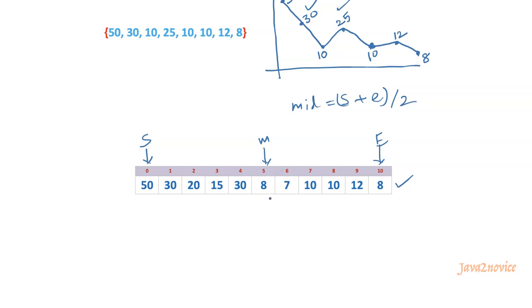Is the mid element 8 a peak element? No, it is not. So we need to move either right or left. We start by comparing with its left neighbor: 30 is greater than 8, so we will continue searching for peak elements on its left side. If the left neighbor were smaller, we would compare with the right neighbor, and if the right neighbor is greater than the mid value, we continue searching on the right side. In our case, we search on the left side and need to readjust our pointer values for the next iteration.